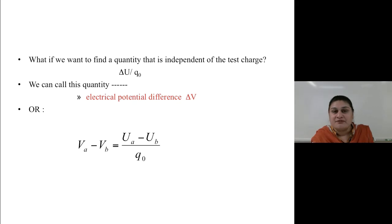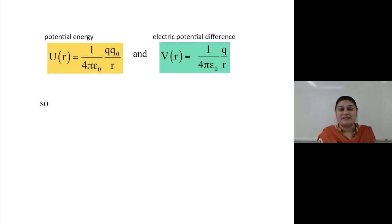Mathematically, VA minus VB equals UA minus UB over Q naught. Its units are 1 volt, which is joules per coulomb. What is the basic difference between potential energy and electrical potential? The basic difference is this test charge. The electrical potential energy depends on a reference charge Q0. The electrical potential difference does not.